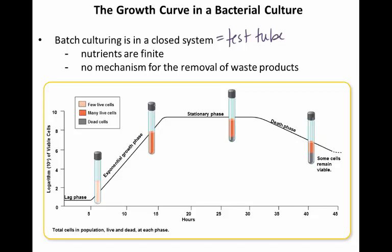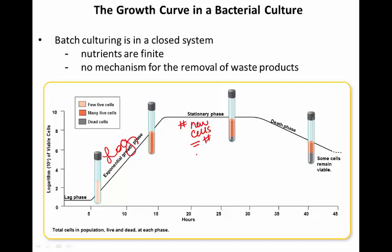Here we see the exponential growth phase, oftentimes also called the log phase — logarithmic growth phase. We say lag to log. Here we see organisms utilizing those nutrients, multiplying and multiplying. Eventually we reach what we consider the stationary phase. In the stationary phase, the number of new cells being produced is actually equal to the number of cells dying — in other words, there is no population increase.